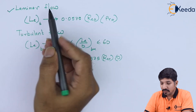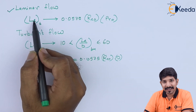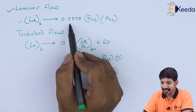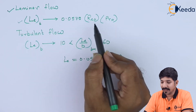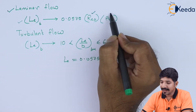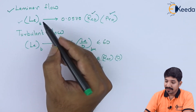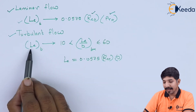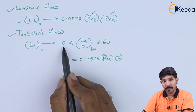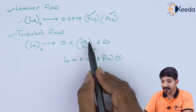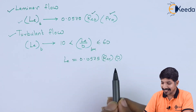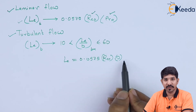If the flow is laminar, the length of the thermal entry region is given by the empirical relationship: L_e,t = 0.0575 × Re_D × Pr × D, where Re_D is the Reynolds number and Pr is the Prandtl number. For turbulent flow, when the ratio is between 10 and 60, the entry length is given as: L_e,t / D = 0.0575 × Re_D.